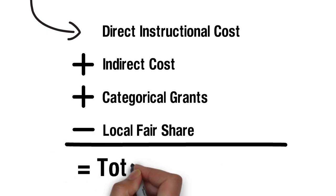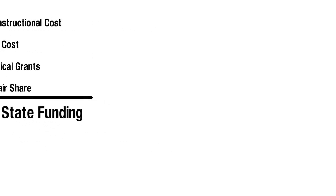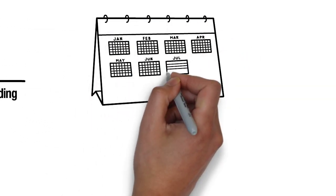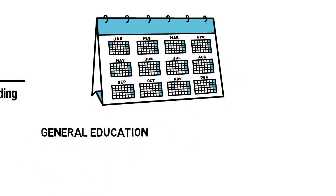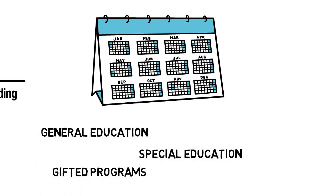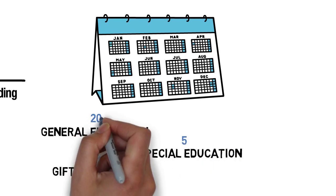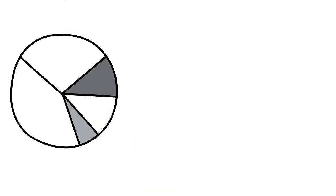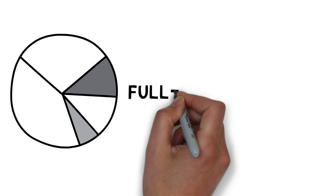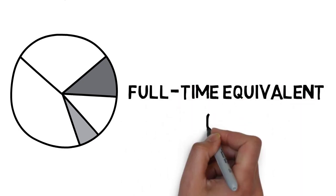We'll talk through each of those buckets, but first it's key to understand how QBE counts students. Twice a year, every school in the state counts the number of students present and notes what classes they are in — think general ed, gifted, or special education. These programs are funded differently based on things like what the state believes the appropriate class size should be. To account for students in different programs, the state divides up the day, then combines the pieces based on the programs they're in. The result is titled Full-Time Equivalent Students, or FTEs. By counting FTEs, the state can find out how many teachers need to be paid.